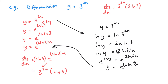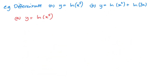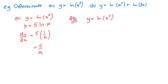You can approach ln(x^5) in two ways. First, use rules of logs to bring the 5 down: 5·ln x, then differentiate to get 5 × (1/x) = 5/x. Alternatively, differentiate straight away: the derivative is 1/x^5 multiplied by 5x^4. The x^4 cancels with four of the x's in x^5, leaving 5/x. Either way gives the same answer.